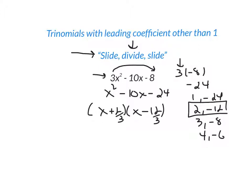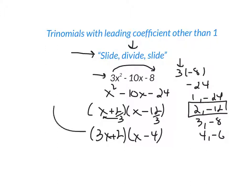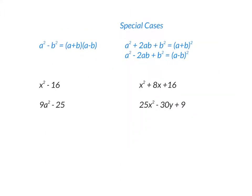Now divide each constant by the number you slid, which was 3. For (x − 12): −12 ÷ 3 = −4, so that becomes (x − 4). For (x + 2): 2 ÷ 3 doesn't divide evenly, so slide the 3 in front of x instead, giving (3x + 2). The final factored form is (3x + 2)(x − 4). You can check using FOIL to confirm you get back to the original expression.